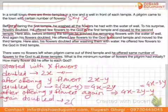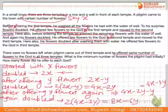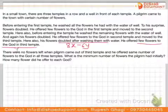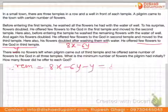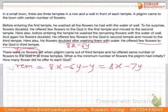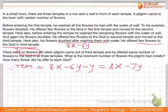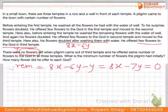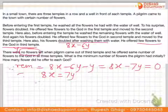He washed the flowers at the third well, doubling them to 2(4x − 3y) = 8x − 6y. He offered y flowers at the third temple, leaving 8x − 6y − y = 8x − 7y. Since no flowers were left after the third temple, 8x − 7y = 0, so 8x = 7y.